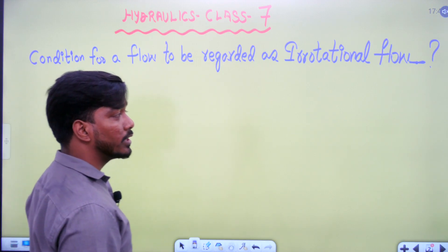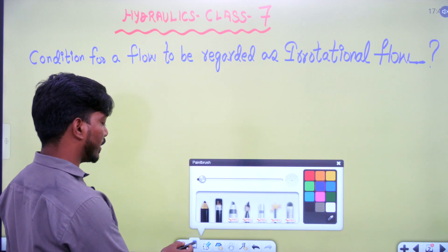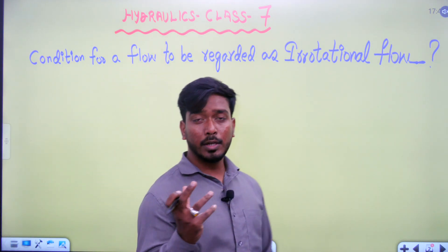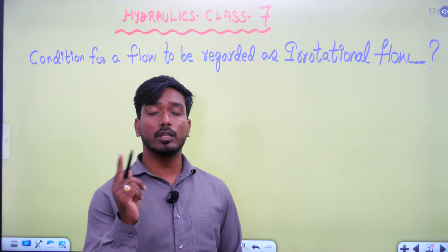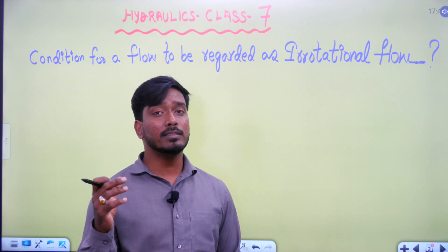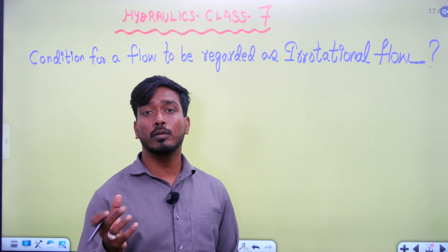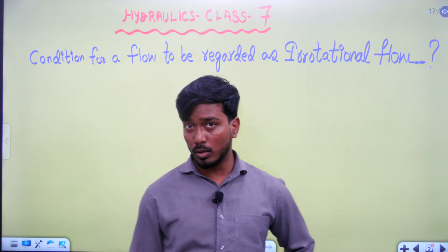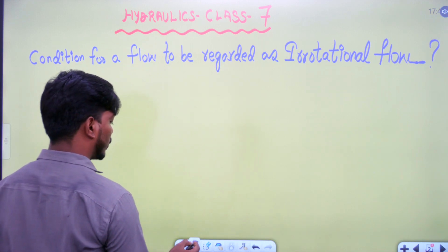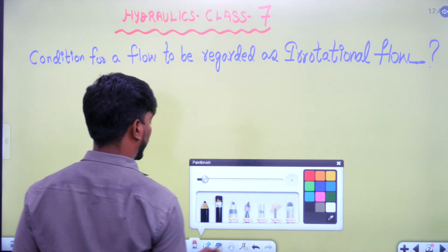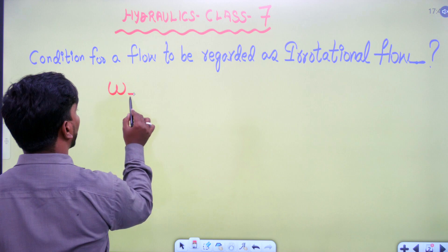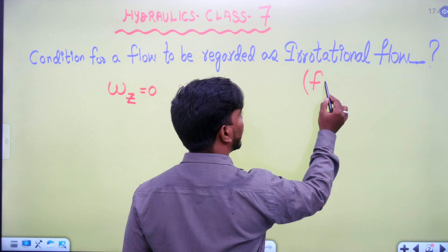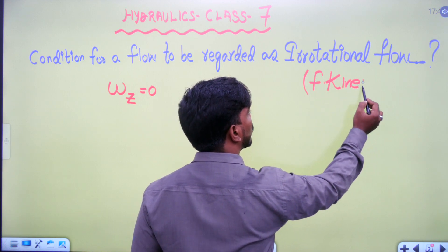The condition for a flow to be regarded as irrotational flow — first of all, you need to remember some basic formulas. Irrotational flow means the fluid is not rotating about its own center of mass. The flow moves in x, y, or z direction but cannot rotate about its own center. A rotating body has angular velocity, so for irrotational flow, angular velocity equals zero.